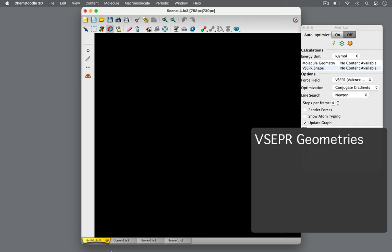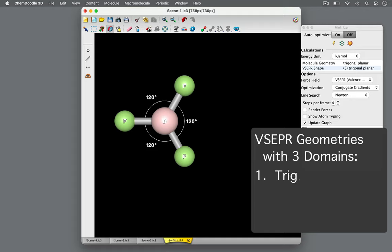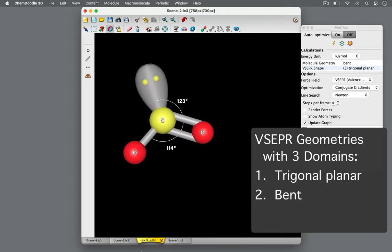VSEPR theory is a model used to predict the geometry of molecules based upon the number of valence shell electrons and the repulsion between these domains of high electron density. When there are three regions of high electron density, VSEPR theory predicts that molecules can adopt one of the following structures: trigonal planar, bent, and linear.